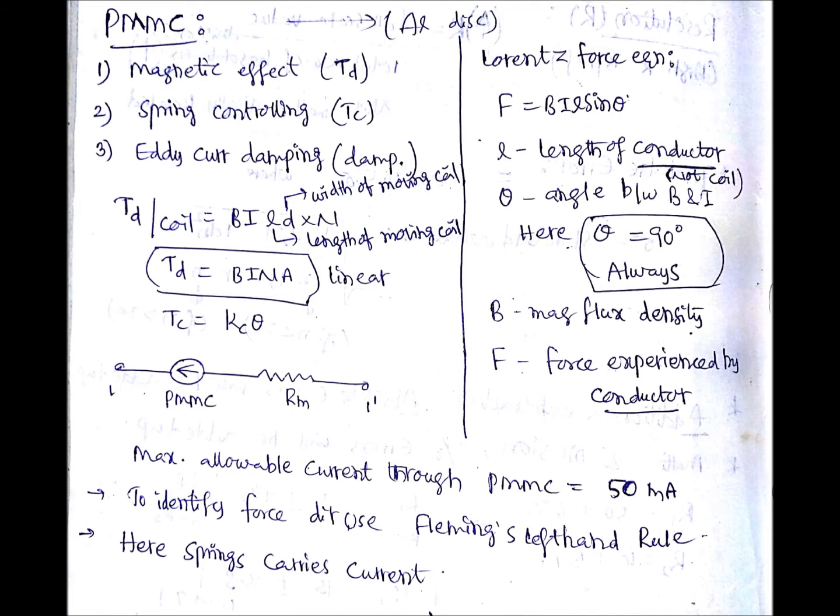Here theta equals to 90 degrees always, we are maintaining that. So then sin theta is going to become one. Then if you apply that to the torque, TD deflection torque per coil is becoming B I L D into N.